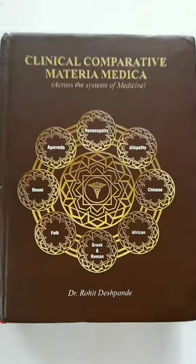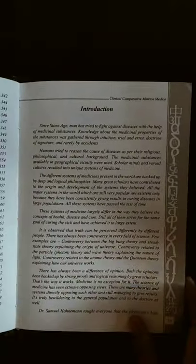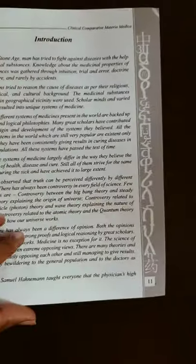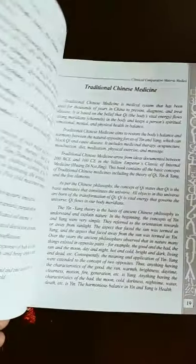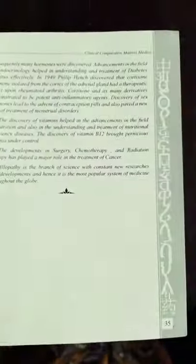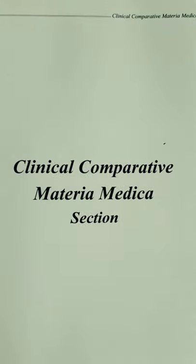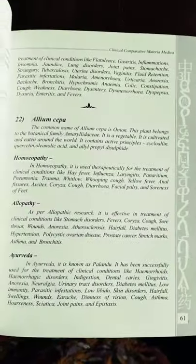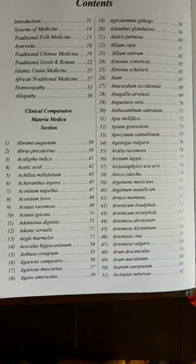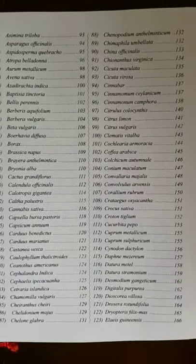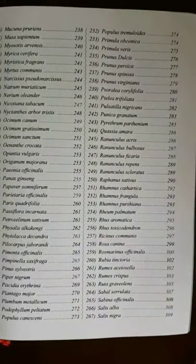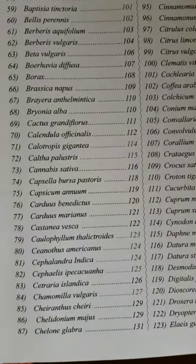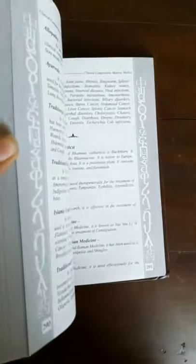Talking about the author, Dr. Rohita Spandy is a well-known homeopath and a dedicated author. The book starts with an introductory section in which sir gives a precise and brief description about each system of medicine — their origin, the principles on which cures are made possible, and so on. This is followed by the clinical comparative materia medica part, which discusses the therapeutical usages of different medicinal substances across systems. Going through the index, one may note that most of the medicines are plants, likely because most systems rely on plant-based medicinal substances.